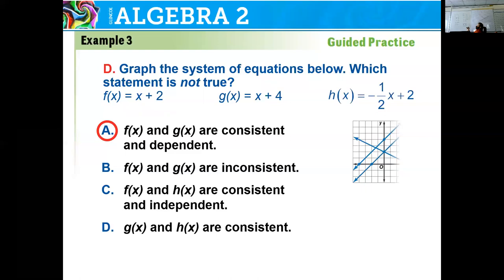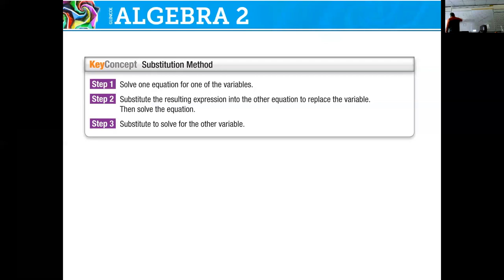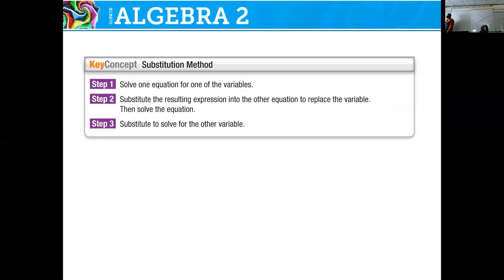Now for the substitution method — I highly recommend writing these steps down. Step one: solve one equation for one of the variables — it doesn't matter whether you solve for x or y. Step two: substitute the resulting expression into the other equation, replacing that variable, then solve for the remaining variable. Step three: substitute that value back in to solve for the other variable. It's a lot of solving and substituting — that's why it's called the substitution method.